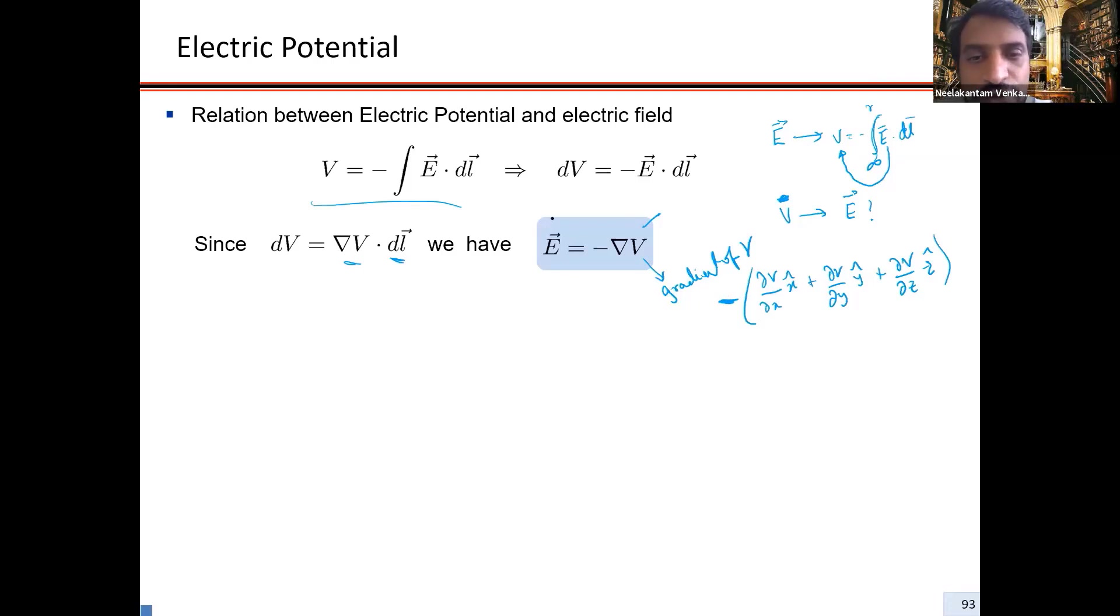Instead of gravitational force, you're having electric field. Electric force is the negative gradient of electric potential.